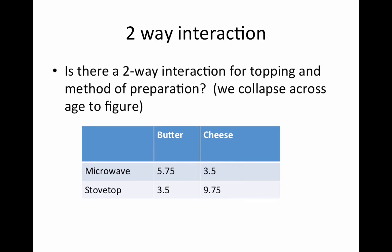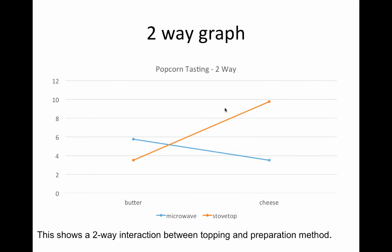What about two-way interactions? We collapse across the third variable to look at all possible two-ways. Looking at topping and cooking method, we got 5.75 versus 3.5 in one condition and 3.5 versus 9.75 in another. The difference in one case is very different from the difference in the other, which suggests a pretty good interaction between kind of topping and kind of preparation. The graph shows a nice two-way interaction with butter and cheese as topping and microwave versus stovetop as cooking method.